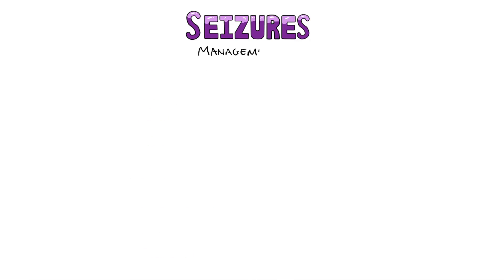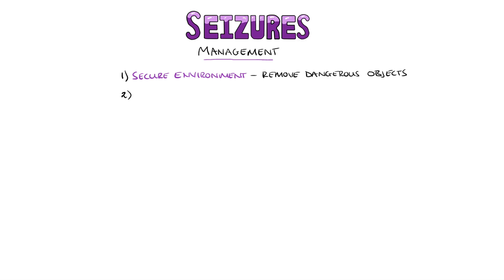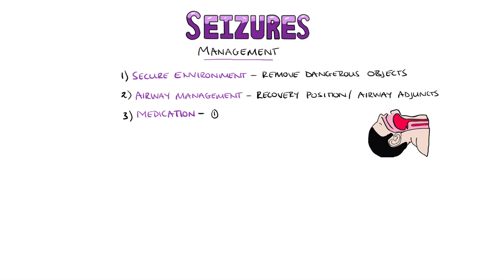As for management, during the seizure any hazardous objects should be removed from the vicinity to avoid injury, and following the seizure the individual should be placed into the recovery position to prevent choking, with appropriate airway management if the airway is compromised. The first line pharmacological therapy is a benzodiazepine, often lorazepam or diazepam. A second dose may be given after 10 minutes, and if this has not resolved the seizure, barbiturates or propofol may be used.